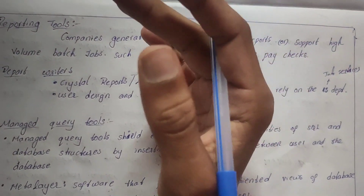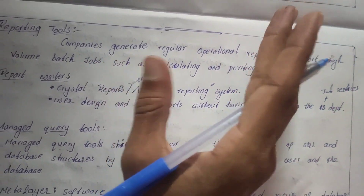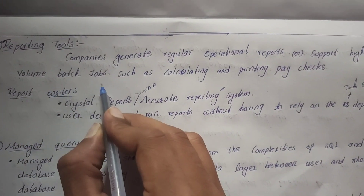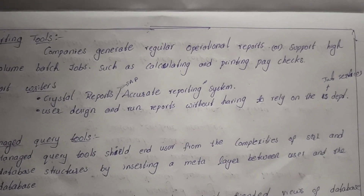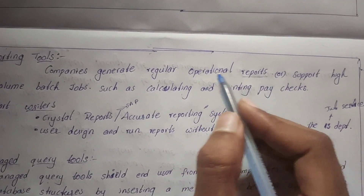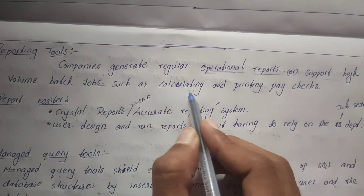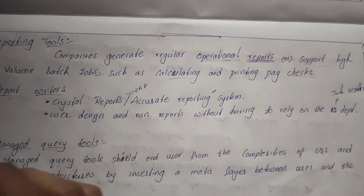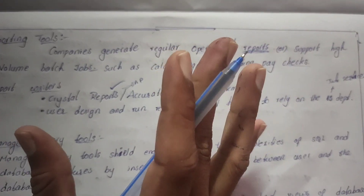When we extract data from a data warehouse, we need to create a report for a particular company. Companies generate regular operational reports and support high-volume batch jobs such as calculating and printing paychecks. One example of a reporting tool is Crystal Reports.